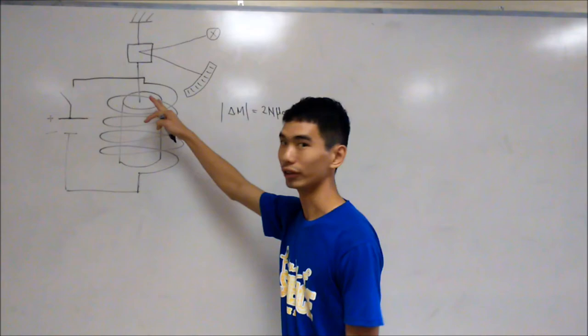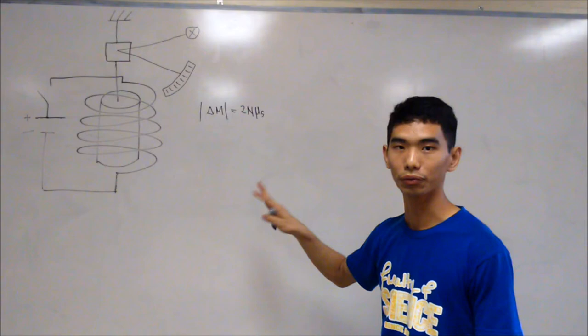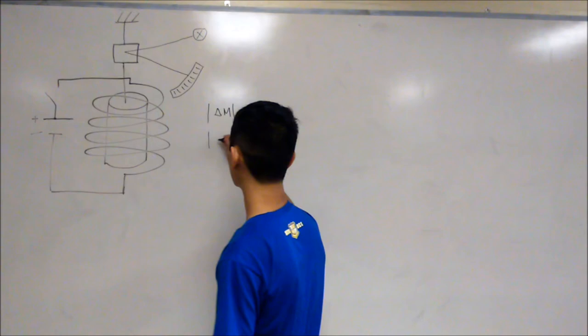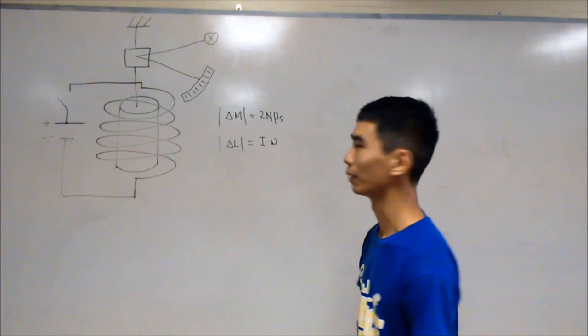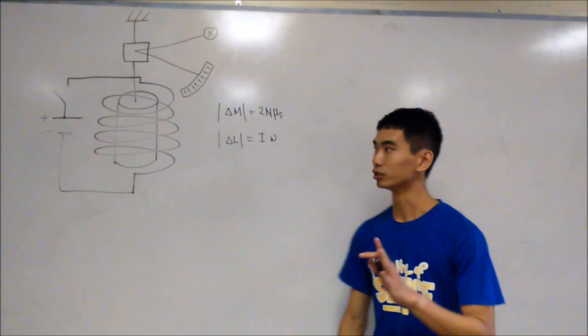So what we have over here is a realigning of the electrons. However, when we conduct this experiment, what we will observe is a net rotation of this magnet, which can be described by the following. The change in angular momentum of the magnet itself is the moment of inertia multiplied by omega, which is the angular velocity.